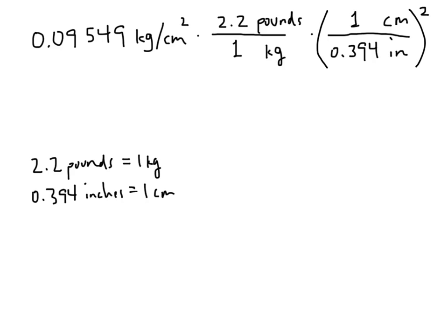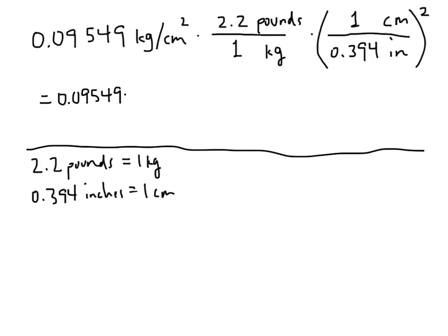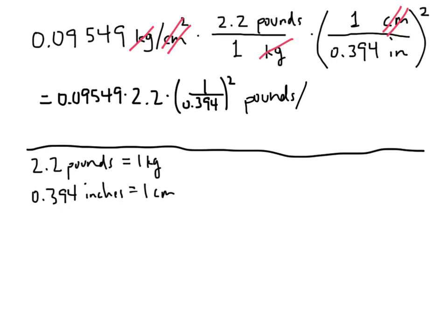So now we have 0.09549 times 2.2 times 1, divided by 0.394 squared. The kilograms divide out with the kilograms, and the two copies of centimeters divide out with the two copies of centimeters, leaving us with pounds over square inches — exactly pounds per square inch, which is what we wanted. Throwing all the numbers into the calculator, we end up with 1.353 pounds per square inch.